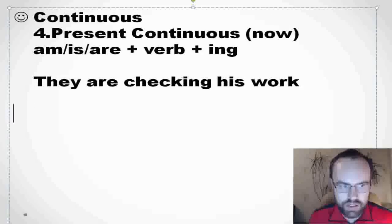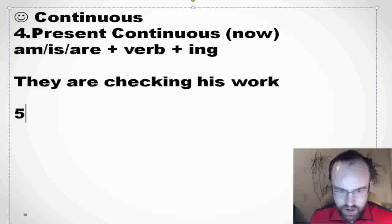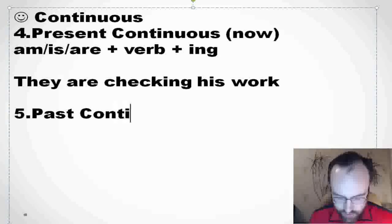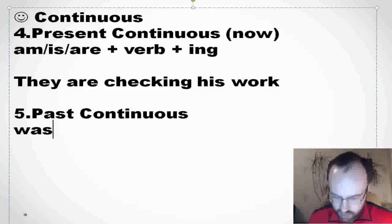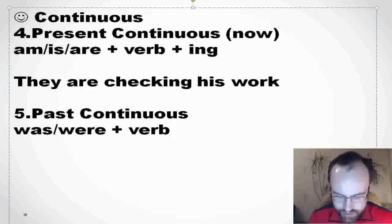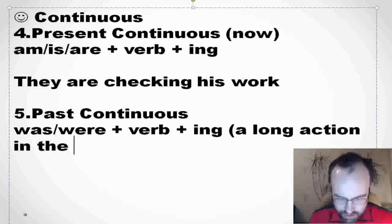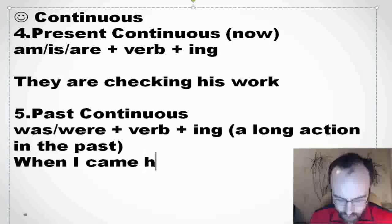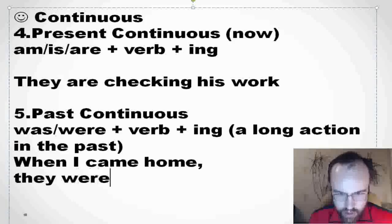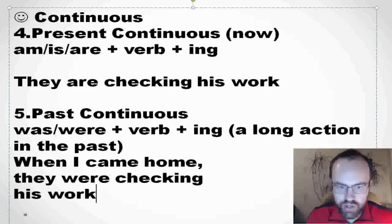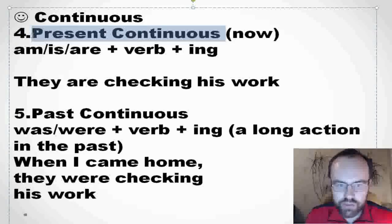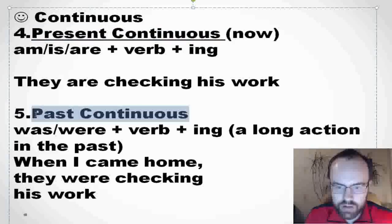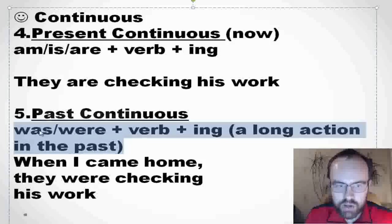What about past continuous? We form it with was or were plus verb plus -ing. It's a long action in the past. We often use it with 'when.' When I came home, they were checking his work. Present continuous is for things happening now; past continuous is for long actions in the past — was/were plus verb plus -ing.